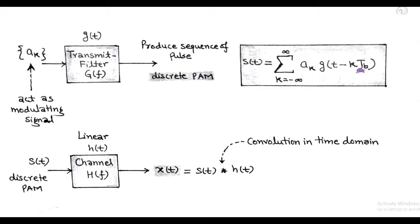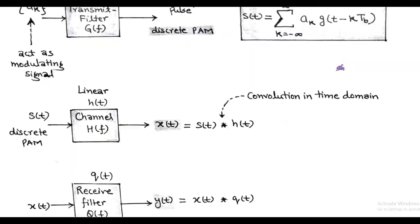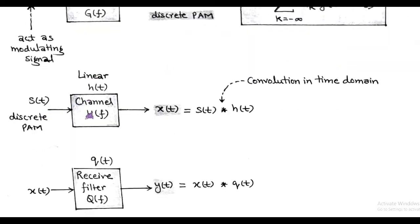This discrete PAM signal s(t) is transmitted using a linear channel having transfer function H(f). At the output of this channel we get signal x(t), that is equal to the convolution of input signal s(t) and the impulse response h(t) of the linear channel, in the time domain.